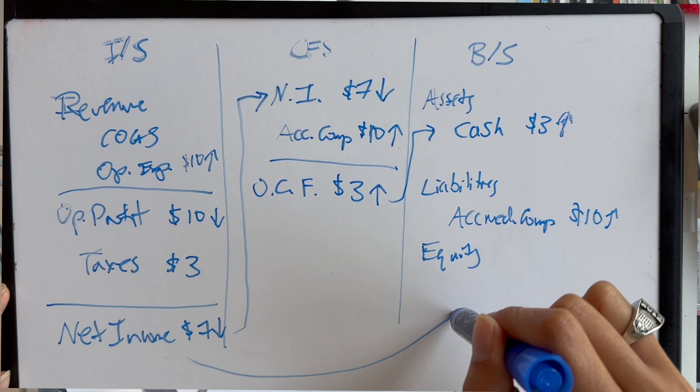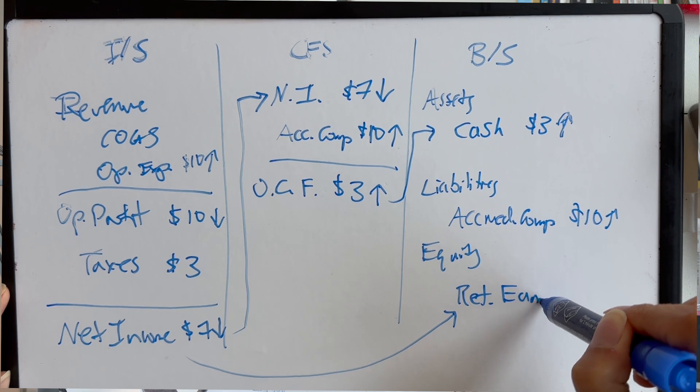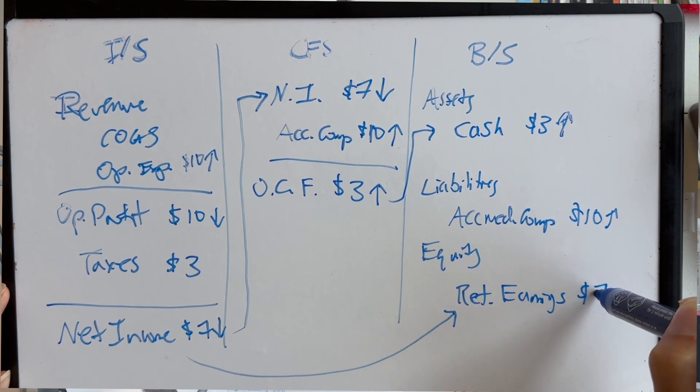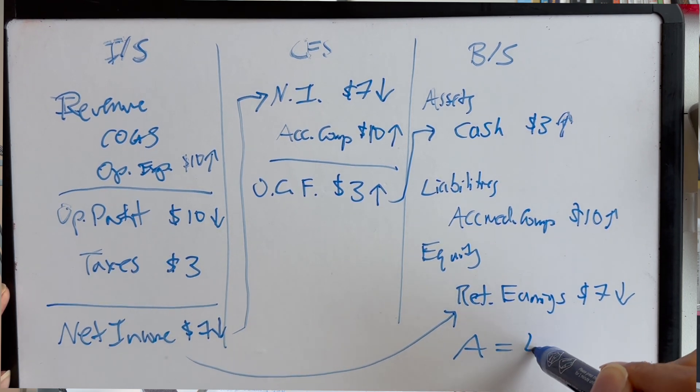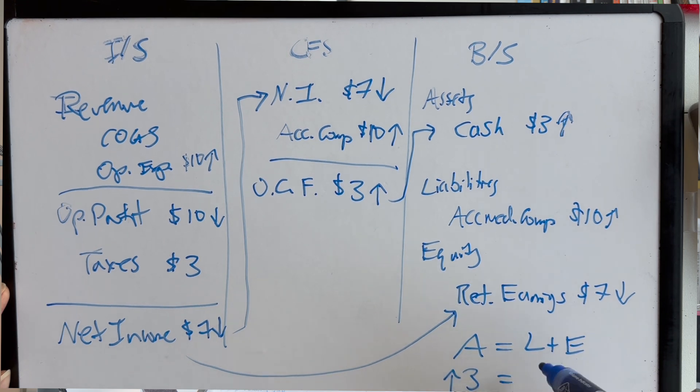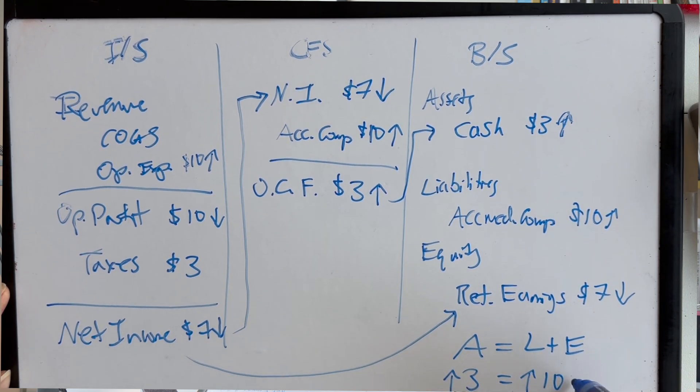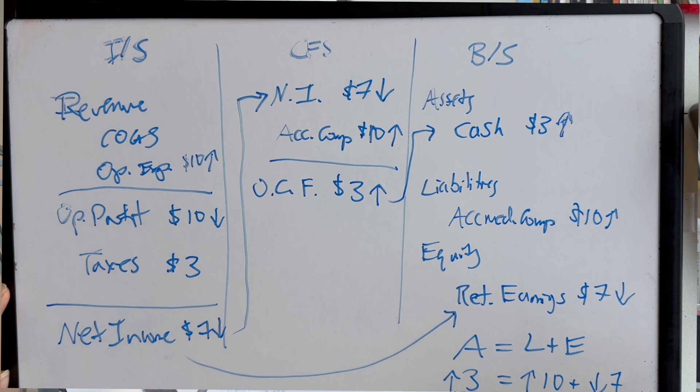And so, something has to be going on here. And in this case, it's equity. So, our net income flows over to the equity in terms of retained earnings. So, retained earnings is down by $7. I'm just going to write out the basic equation here. Assets equal liabilities plus equity, right? So, assets are going up by $3. Liabilities are going up by $10. And equity is going down by $7. So, this balances, right? $3 equals $10 minus $7.